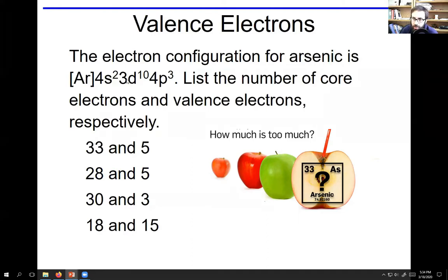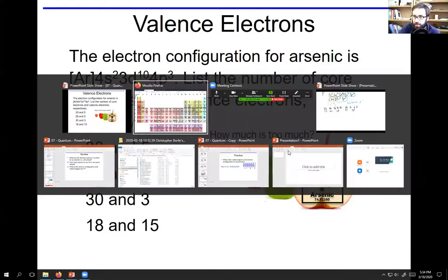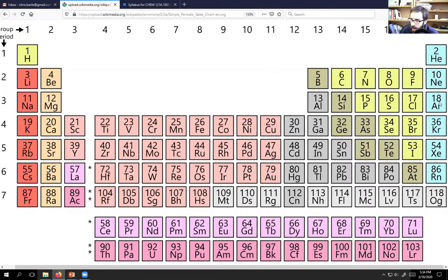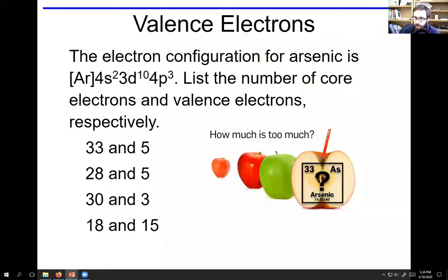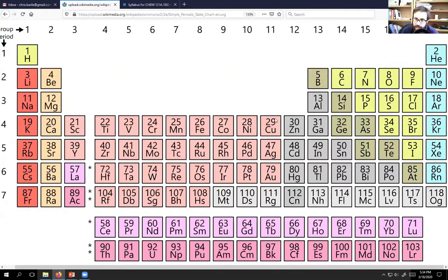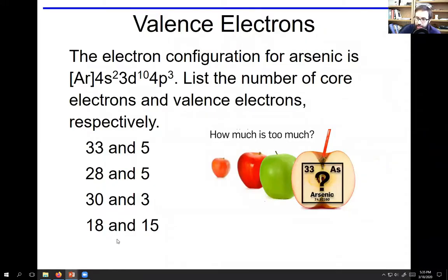Let's go through this. For arsenic, the electron configuration is correct: bracket argon 4s² 3d¹⁰ 4p³. Check that on the periodic table - here's arsenic. Sorry, there's a typo on that one. We're at bracket argon 4s², 3d¹⁰ brings us to zinc, and then 4p³. This electron configuration is correct. How many core electrons? Up to argon - 18, that's the noble gas. How many valence electrons? All the other ones: 1, 2, 3, 4, 5, 6, 7, 8, 9, 10, 11, 12, 13, 14, 15. So 18 and 15 is the correct answer.